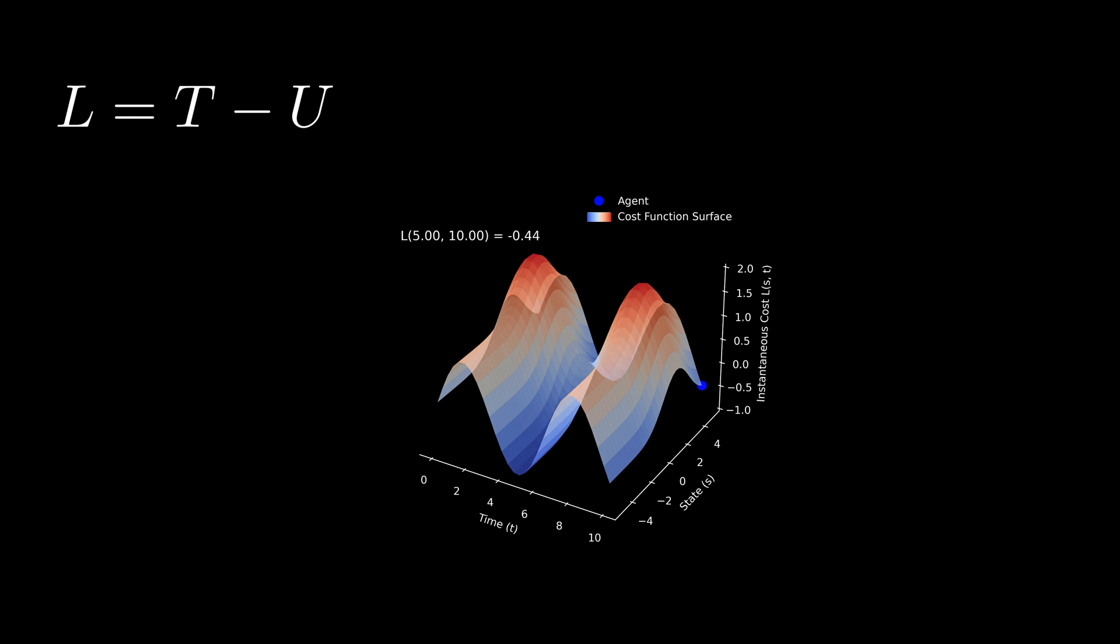To understand how physics connects to AI's reinforcement learning, let's start with a fundamental concept in classical mechanics, the Lagrangian. In classical mechanics, the Lagrangian is defined as the difference between kinetic and potential energy. In AI's reinforcement learning, the Lagrangian can be interpreted as the instantaneous cost of deciding the next step at a given time and state.